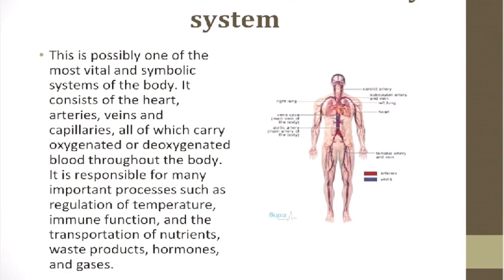The cardiovascular or circulatory system is possibly one of the most vital and symbolic systems of the body. It consists of the heart, arteries, veins, and capillaries, all of which carry oxygenated or deoxygenated blood throughout the body. It is responsible for many important processes such as regulation of temperature, immune function, and the transportation of nutrients, waste products, hormones, and gases.